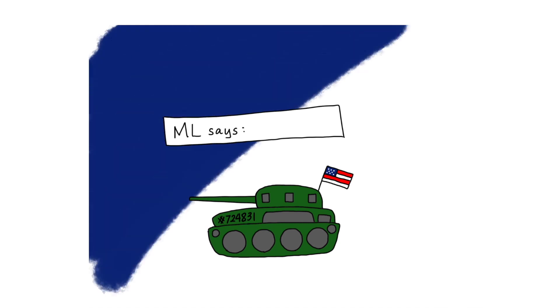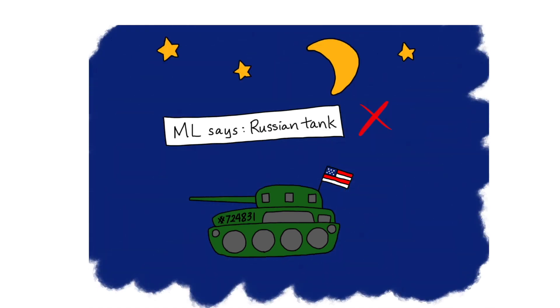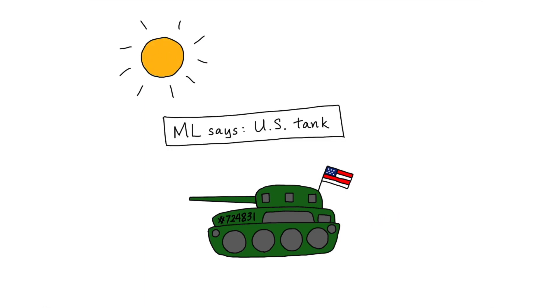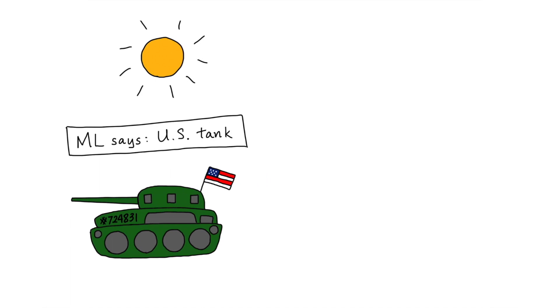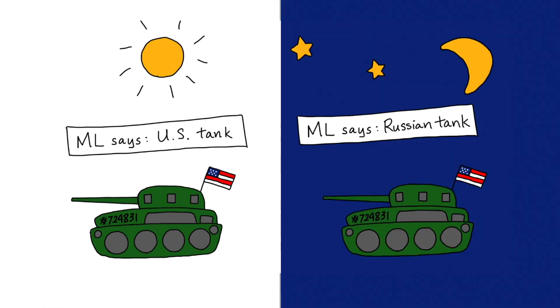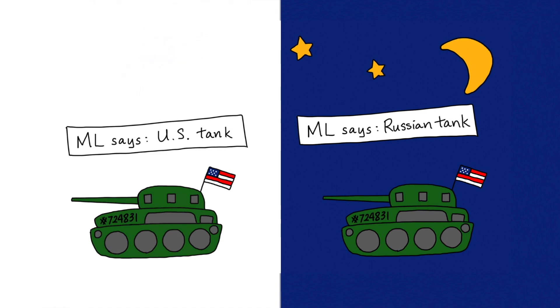People noticed that the algorithm would label all tanks seen at night as Russian tanks and all tanks seen during the daytime as American tanks. It turns out that all of the pictures of Russian tanks used during training were taken at night or in low visibility conditions because that was when US spies were able to sneak in to get pictures, but the photos of American tanks were all taken in brightly lit rooms or during the day. So instead of learning the different features of American versus Russian tanks like the researchers had intended, the ML algorithm instead learned the difference between night and day. This is commonly known as the Russian tank parable, and it's a great example of how overfitting in machine learning can lead to huge real life consequences.